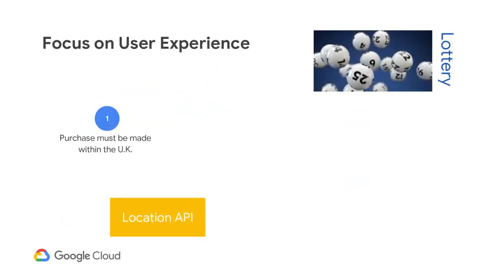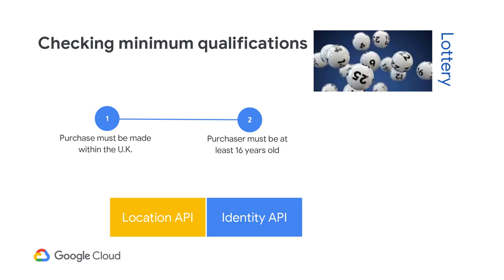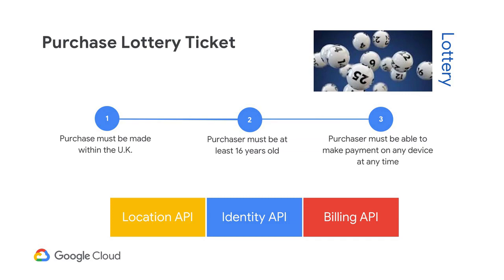Let me give you an example. A lottery company in the UK wanted to make purchasing a lottery ticket easy for their players. Their goal was to give everyone the ability to make a purchase anytime, anywhere. However, there were some regulations that needed to be met before the player could purchase the ticket. First, the purchase of a lottery ticket must be made from within the UK, which requires that the application be able to geolocate the player. Luckily, most telcos have a location API available for use. Next, the lottery requires the purchaser to be at least 16 years of age. Therefore, the application must be able to identify the player and look up the player's profile to determine if the minimum age qualifications are met. This can be done through an identity API. Once the minimum qualifications have been met and the player is ready to purchase, the application must provide the ability to pay. The billing API allows the application to accept payment and the player to complete the purchase of a lottery ticket.